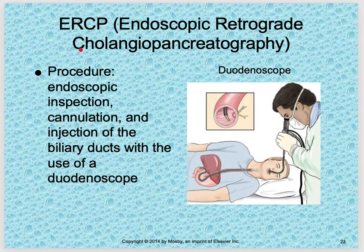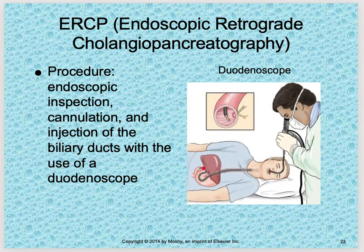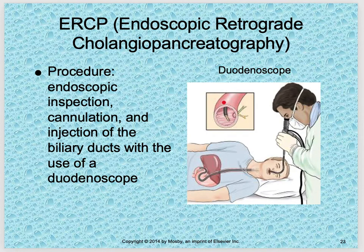ERCP — endoscopic retrograde cholangiopancreatography — is usually done in a surgical suite. The procedure involves endoscope inspection, cannulation, and injection of the bile ducts. They go through the mouth, down the esophagus into the stomach, then curve around and up through the sphincter. They inject dye to see if anything is clogged or if there are stones that need to be removed, and they may open the sphincter to allow better bile flow.